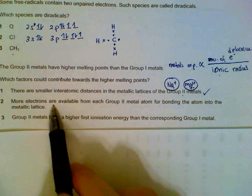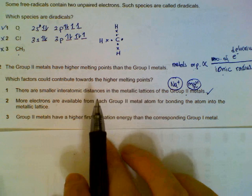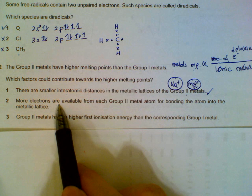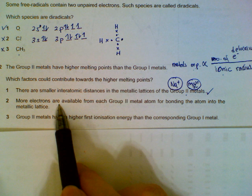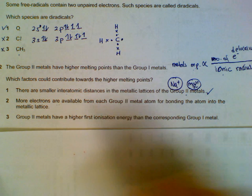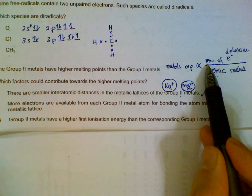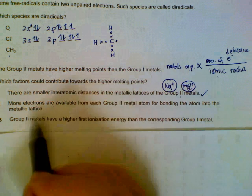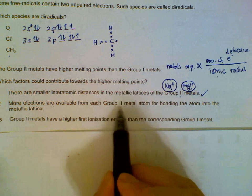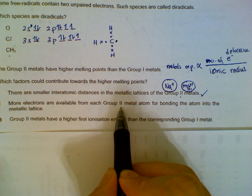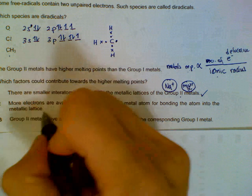Statement 2: More electrons are available from each group 2 atom. Each group 2 atom can donate two electrons; each group 1 atom usually will donate only one electron. So the more electrons you have into the sea of electrons, the stronger the glue will be. More electrons available from group 2 will allow them to have stronger metallic bonding. So this is true.